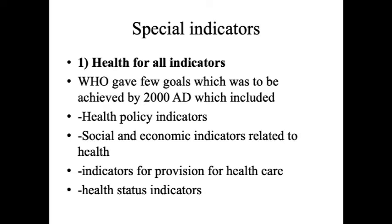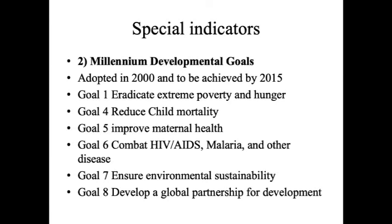Special indicators include the Health for All indicators, where WHO gave goals to be achieved by 2000, including health policy indicators, social and economic indicators, and health status indicators. After reviewing these, WHO came up with the Millennium Development Goals (MDGs) adopted in 2000 to be achieved by 2015. Health-related goals included: Goal 1 — eradicate extreme poverty and hunger; Goal 4 — reduce child mortality; Goal 5 — improve maternal health; Goal 6 — combat HIV/AIDS, malaria and other diseases; Goal 7 — ensure environmental sustainability; Goal 8 — develop global partnerships.